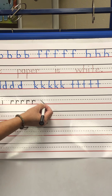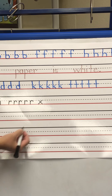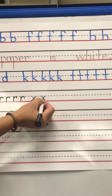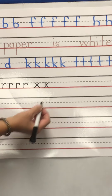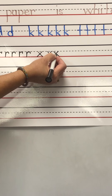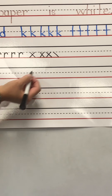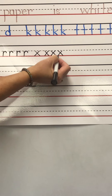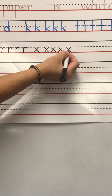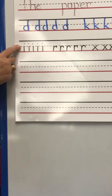X starts on the dotted line. Slant down to the red line, then move over to the dotted line, slant down to the red line. Another X - slant down to the red line, back to the dotted line, slant down to the red line. Make another X, slant down to the red line, back to the dotted line, slant down to the red line. One more X - slant down to the red line, start on the dotted line, slant down to the red line.